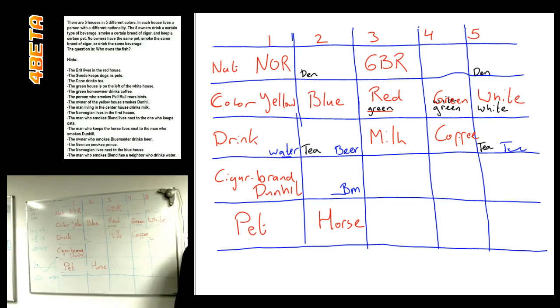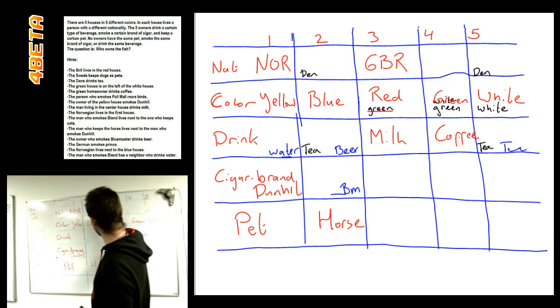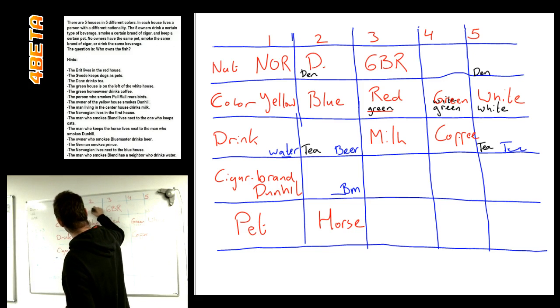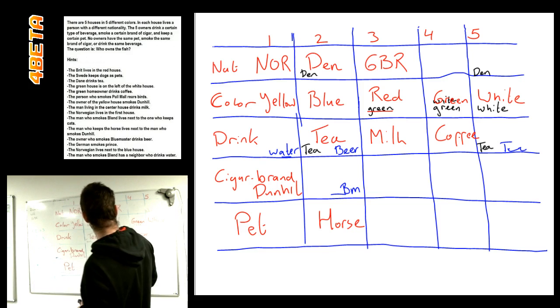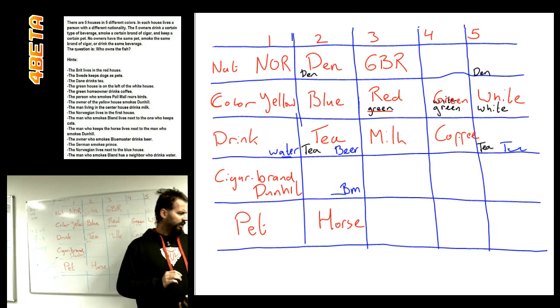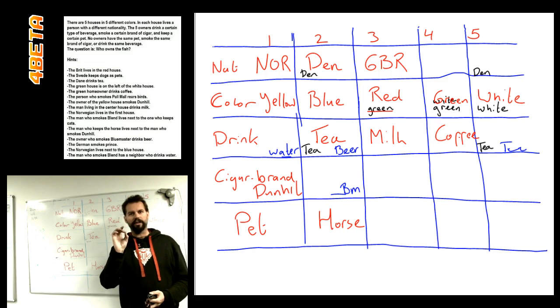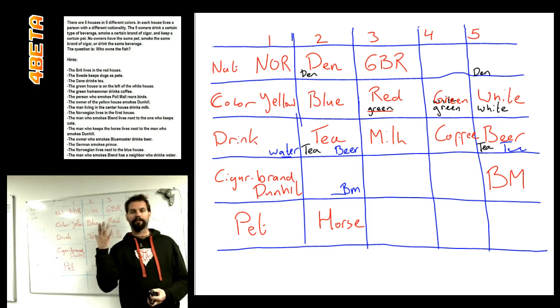Leaving the only other solution, and that is that the Danish guy has to be living in house number two, where he's drinking his tea. Okay. That also directly means that the beer blue master combination is only available in house number five. Because that's the only place where it still fits.